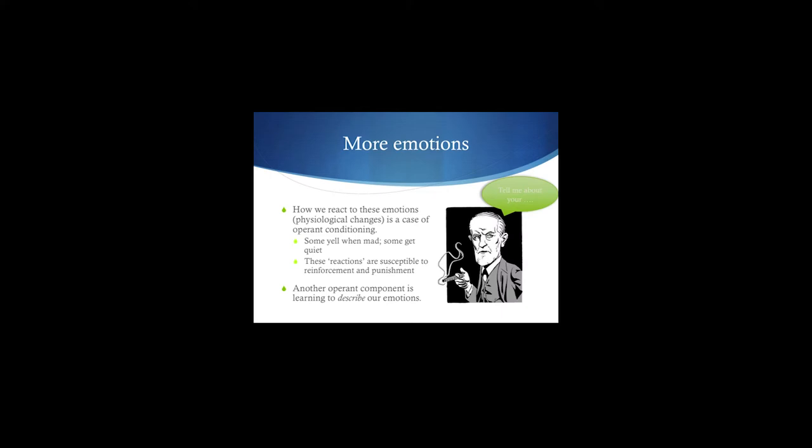Another operant component is being able to describe it. Some people just suck at being able to describe their emotions. Your book talks about research that says by the time you're nine you can describe most of your emotions. Well, some people just aren't that good. They haven't had that much practice or haven't been reinforced for describing their emotions.